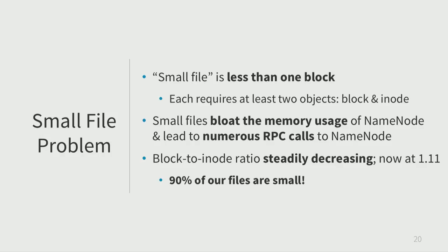Small files also lead to much higher RPC call volume on the namenode. If a fixed amount of data is stored in small files, there are more of them, so listing or collecting metadata for that dataset requires many more namenode calls. It's a double whammy: the namenode is slower due to more memory and garbage collection overhead, and it's servicing more calls. In practice our block-to-inode ratio has steadily decreased to about 1.11 — so roughly 90% of our files are small.